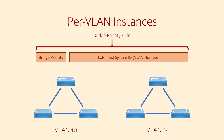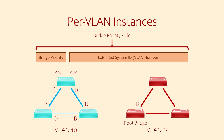Take this topology for example. We have two VLANs, 10 and 20. We can configure different priorities, root bridges, and link costs for each VLAN. This means that the switch selected to be the root bridge for VLAN 10 may be entirely different to the switch selected to be root bridge for VLAN 20.